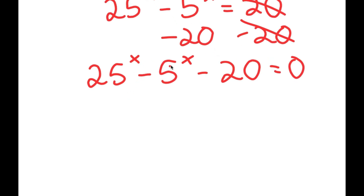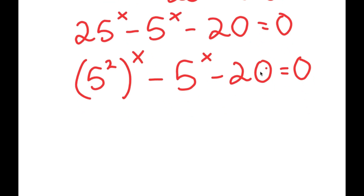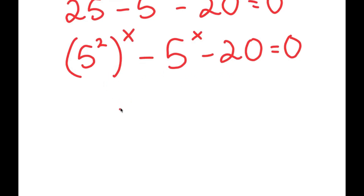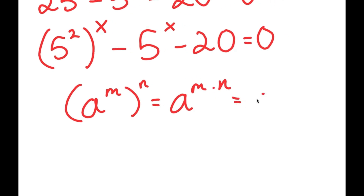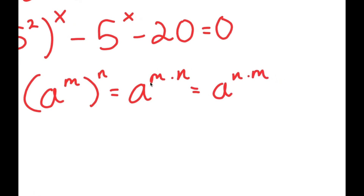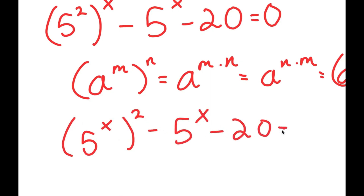Now 25 to the power of x, I can rewrite this as 5 squared to the power of x. Using the property that a to the power of m to the power of n equals a to the power of m times n, I can rewrite 5 squared to the power of x as 5 to the power of x, all squared. So 5 to the power of 2 to the power of x equals 5 to the power of x to the power of 2, giving us 5 to the power of x, quantity squared, minus 5 to the power of x minus 20 equals zero.